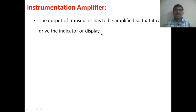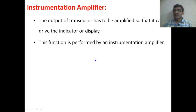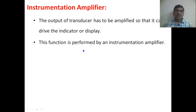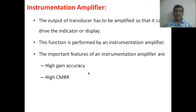Since the transducer output is a very small amount, if we give that output signal to a normal amplifier, it may neglect it because it is so small — it may be attenuated at the input itself. To eliminate that drawback, we use a special amplifier called the instrumentation amplifier, which can handle these very small signals without attenuation.